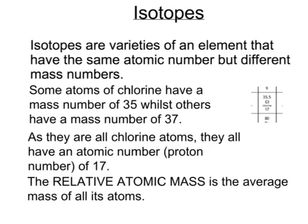And the reason for that is that this number is the average mass of all the atoms in chlorine, and takes into account that some of them weigh 35 and some weigh 37.